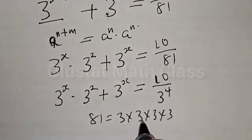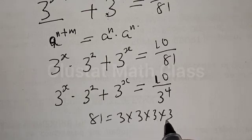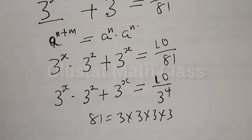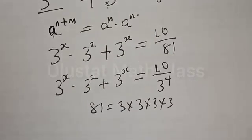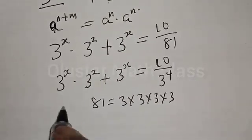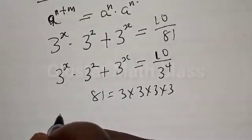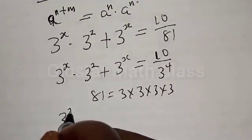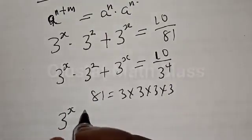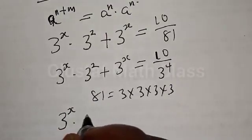We know that 3 raised to power 4 is 81 — that is 3 times 3 times 3 times 3: 3 times 3 is 9, 9 times 3 is 27, 27 times 3 is 81. Therefore our equation becomes 3 to the power x multiplied by 3 squared, which is 9, plus 3 to the power x equal to 10 divided by 3 to the power 4.